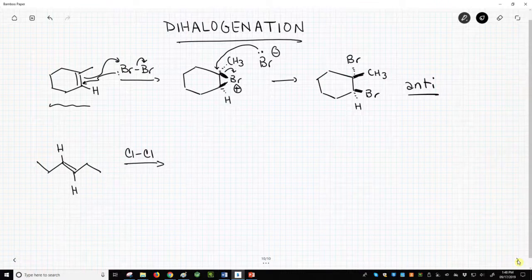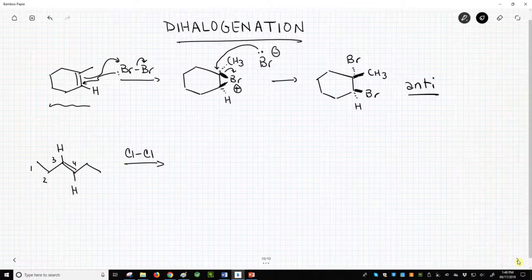At the bottom is another reaction. This time, we have an acyclic alkene and we'll react it with chlorine, Cl2. I've shown the hydrogens on the alkene because we'll need them for reference. Let's also number the carbons in our chain.